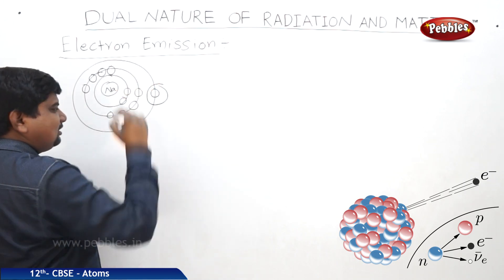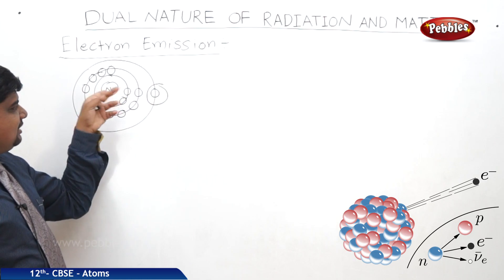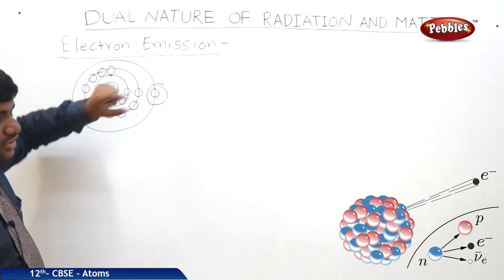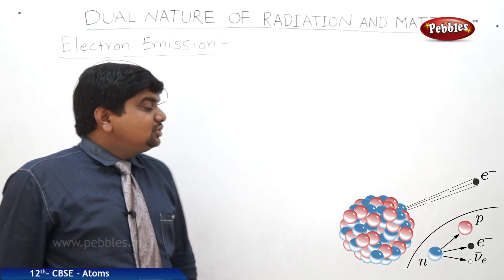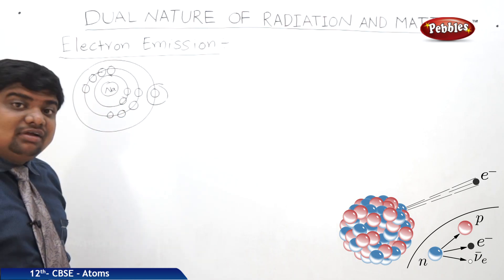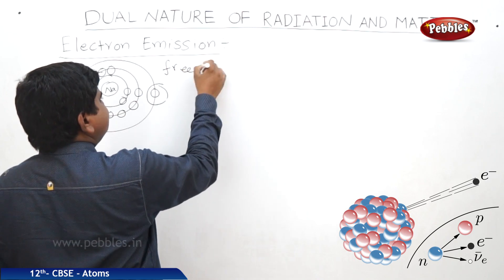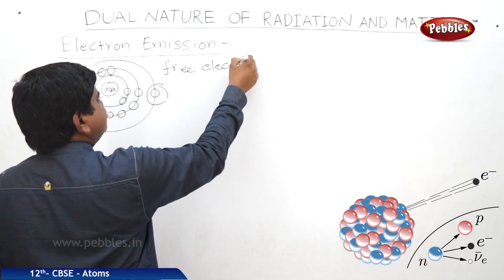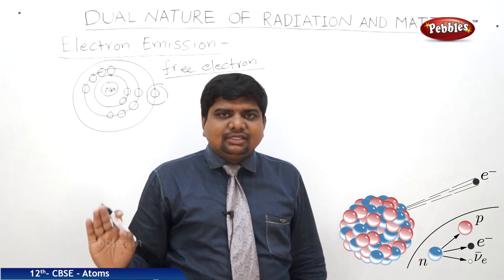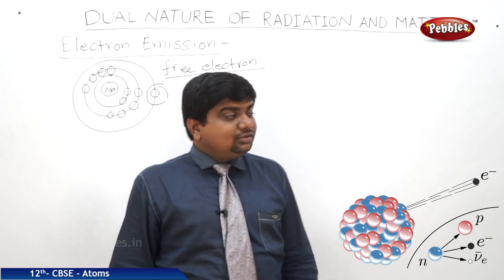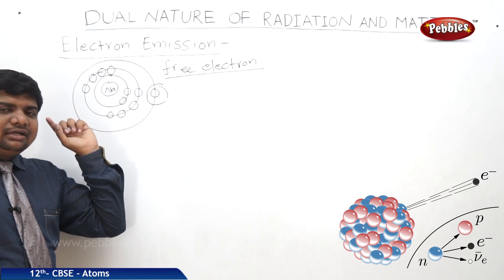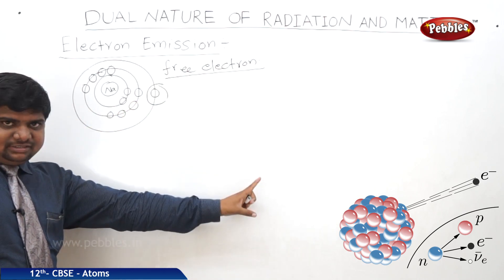The electron in the last orbital has less nuclear influence — it is loosely bound compared to electrons in the first two orbitals. In the case of sodium, the electron in the last orbital is called a free electron. Free electrons are free from bonding, sometimes causing valency, and are available for the conduction of current in metals.